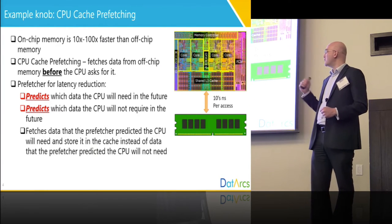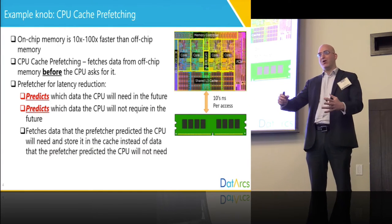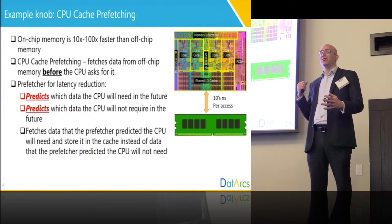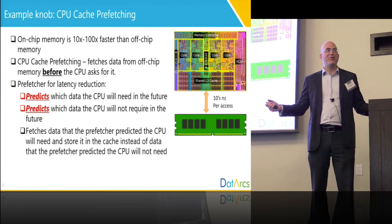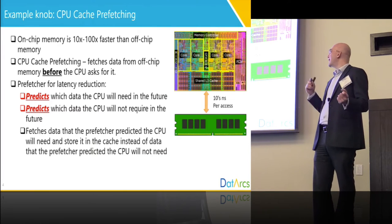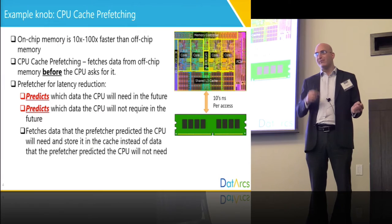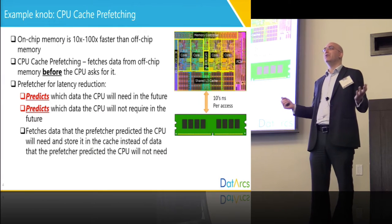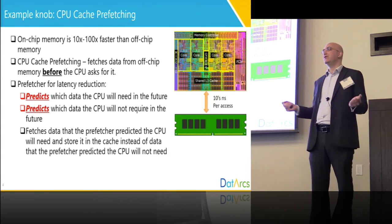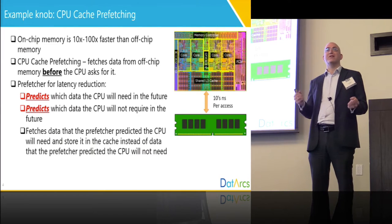Then it prefetches this data, replacing the memory on the die with the memory fetched from outside. If everything works well, we get a very high performance boost. But if we accidentally replaced useful data, then we start getting a very high performance degradation.